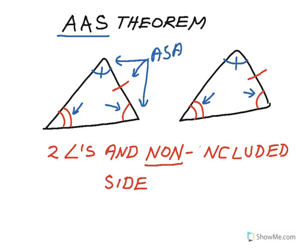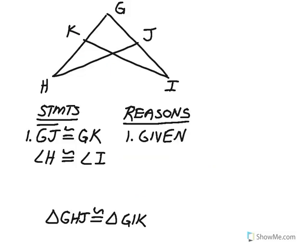So from now on, if we have two angles and any non-included side of a triangle congruent to two angles and a non-included side of the second triangle, then the triangles must be congruent to each other. Let's do an example of this theorem in use.